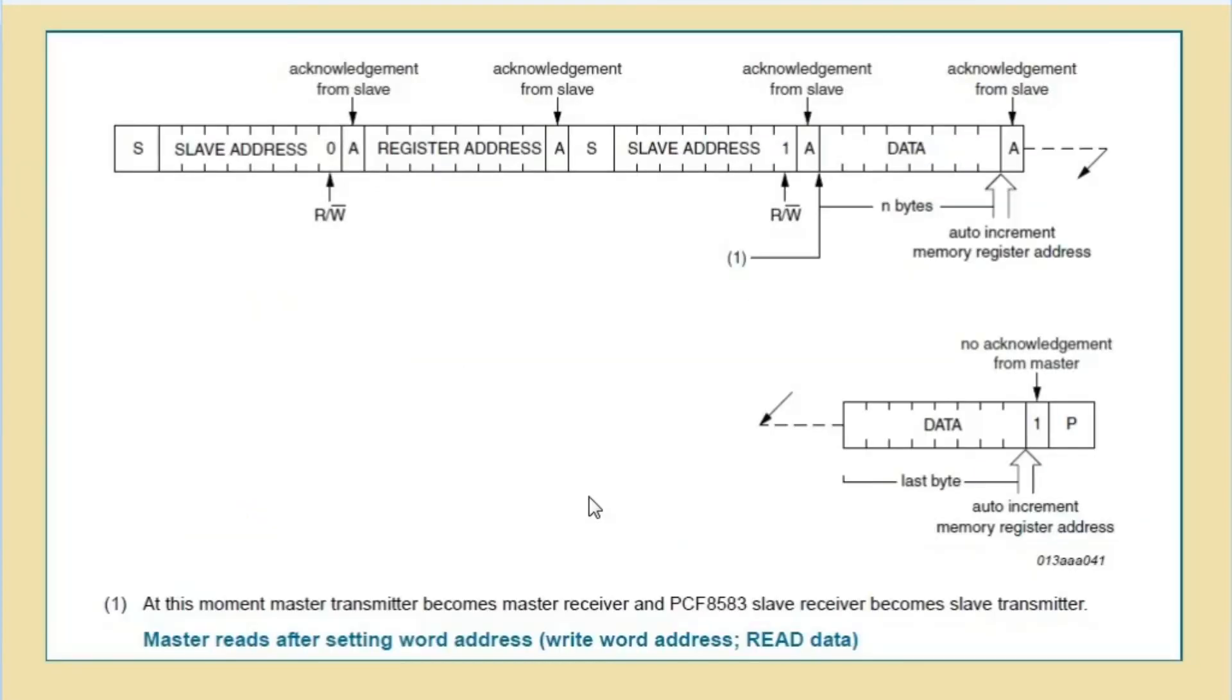In the read mode, master will send start bit followed by slave address including write bit, followed by acknowledgement, followed by register address that is memory location from where we want to read the data, followed by acknowledgement from slave. And then master will send repeat start condition followed by slave address with read bit and followed by slave acknowledgement.